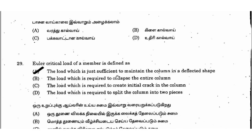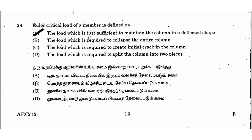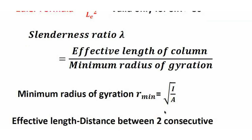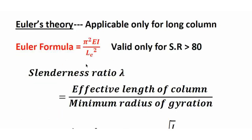Euler's critical load is defined as the load which is just sufficient to maintain the column in a deflected shape. Euler's theory is applicable only for long columns. Euler's formula is π²EA divided by L², valid only for slenderness ratio greater than 80. Slenderness ratio is the effective length of the column divided by the minimum radius of gyration, where the minimum radius of gyration equals √(I/A).